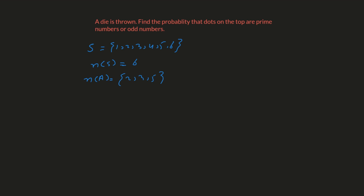The second event, let's call it event B, covers odd numbers. The odd numbers in the sample space are one, three, and five. The number of elements of A is three, and the number of elements of B is also three.